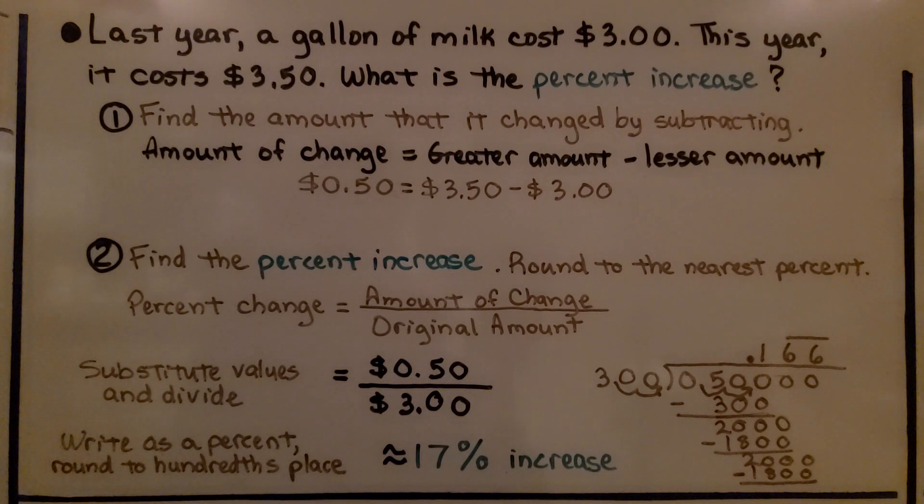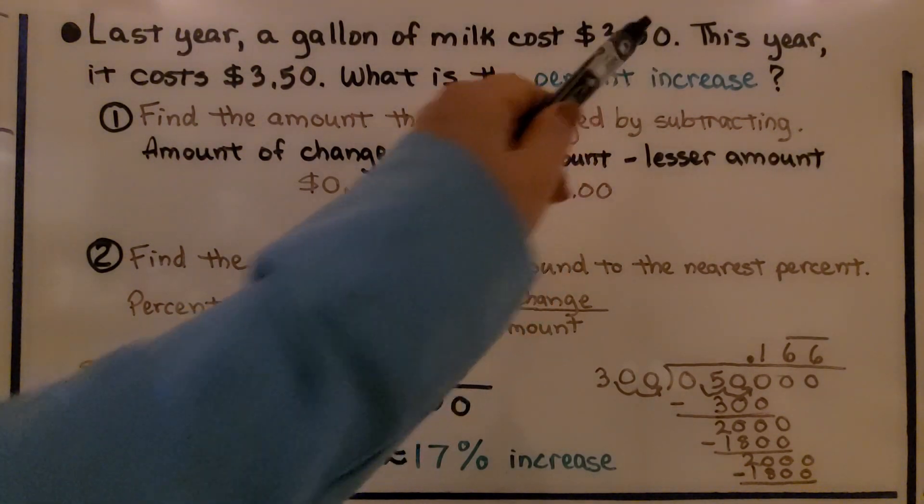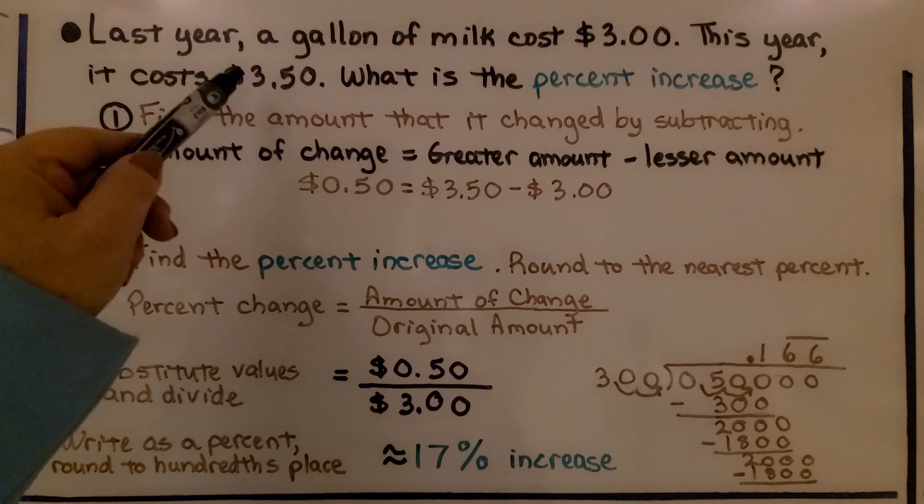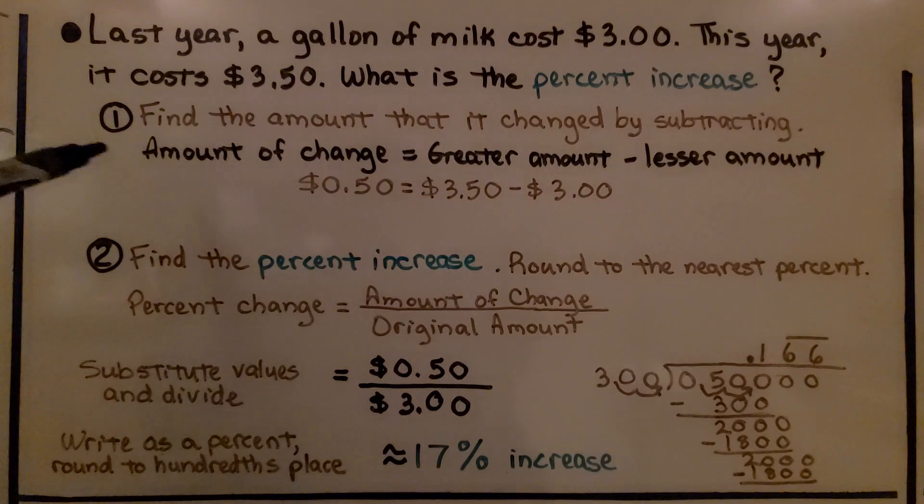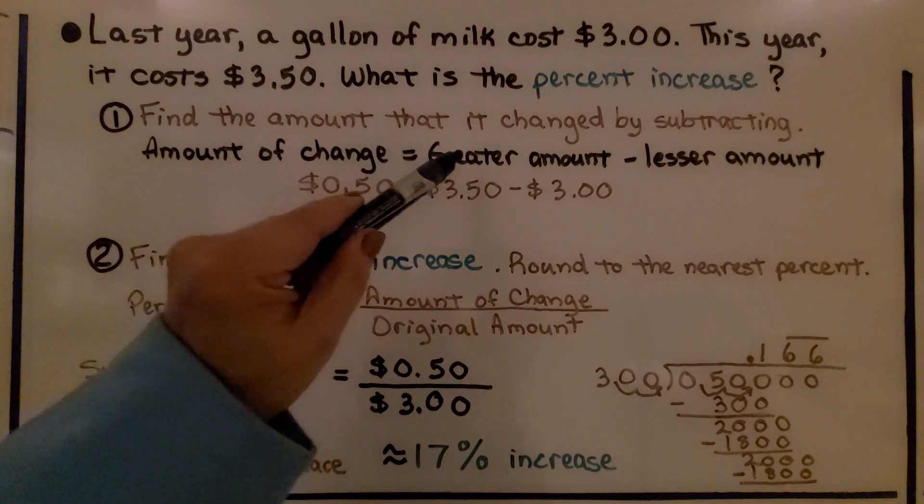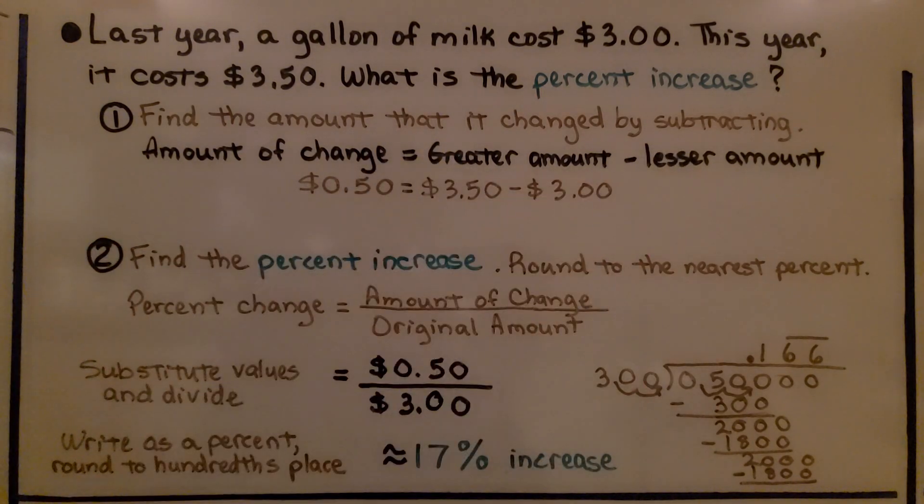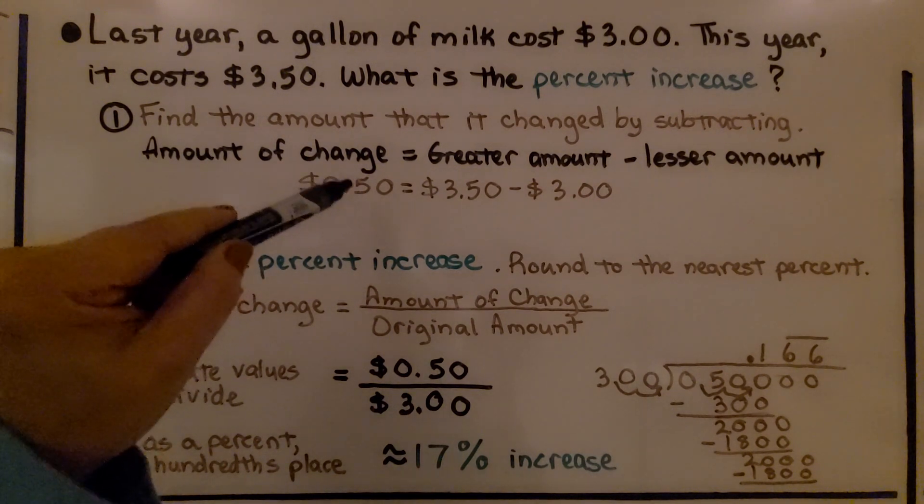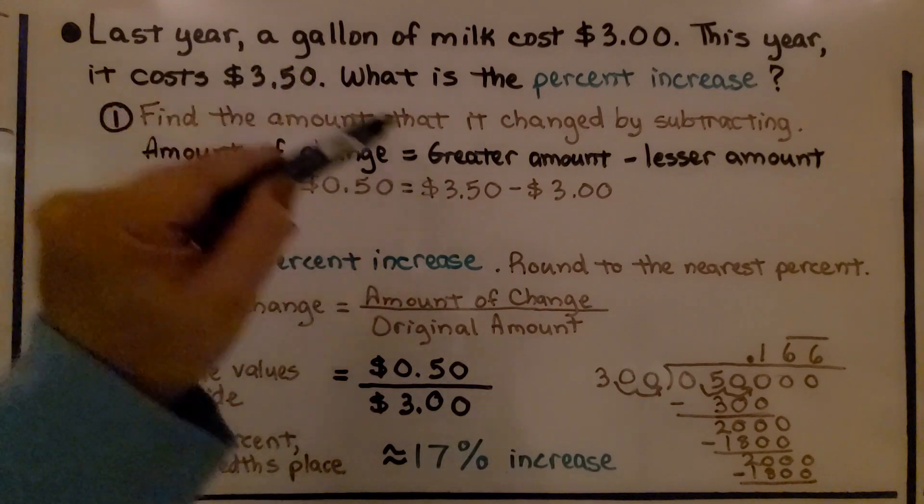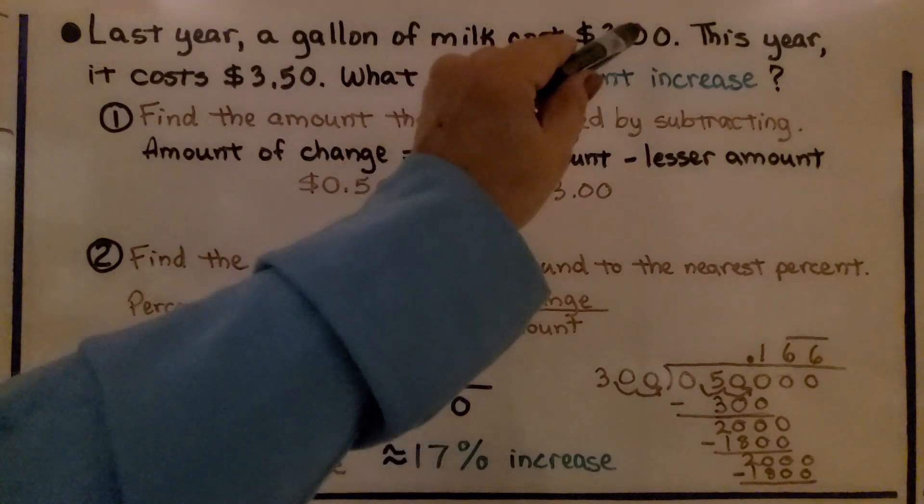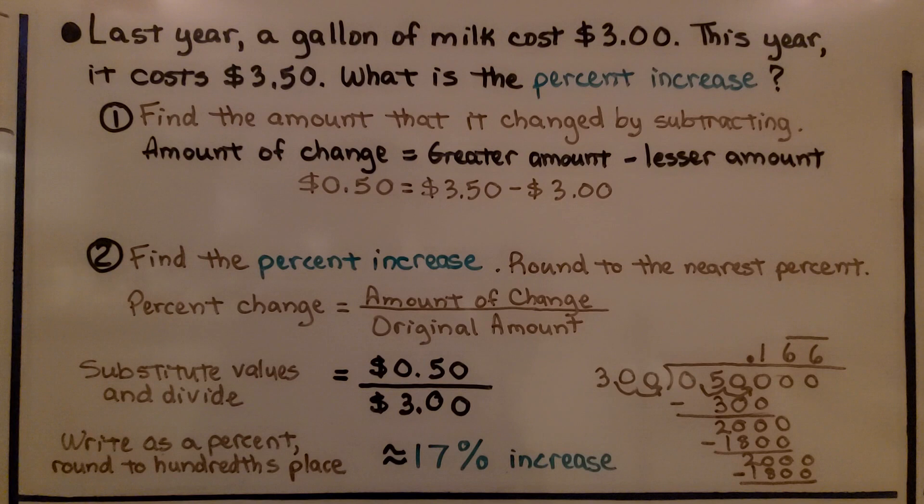Last year, a gallon of milk cost $3. This year, it cost $3.50. What's the percent increase? The very first thing we do is find the amount that it changed by subtracting. We're going to find the difference. The amount of change is equal to the greater amount minus the lesser amount. We have $0.50 is equal to the $3.50, the greater amount, minus the $3 original amount, the lesser amount.